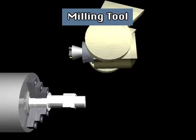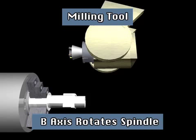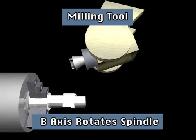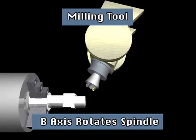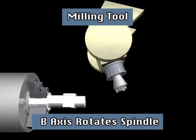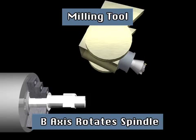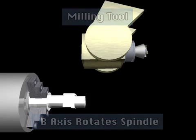However, on this model Integrex, the tool spindle can rotate to perform machining on both the main and sub-spindle. This rotation is controlled by the B-axis. This allows the tool spindle to rotate through 180 degrees.